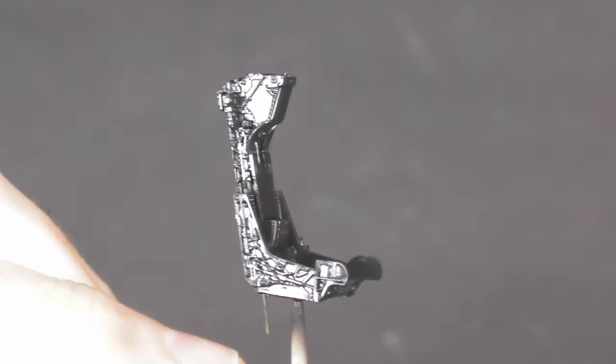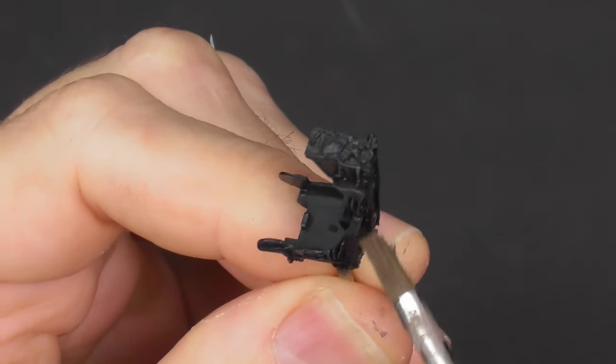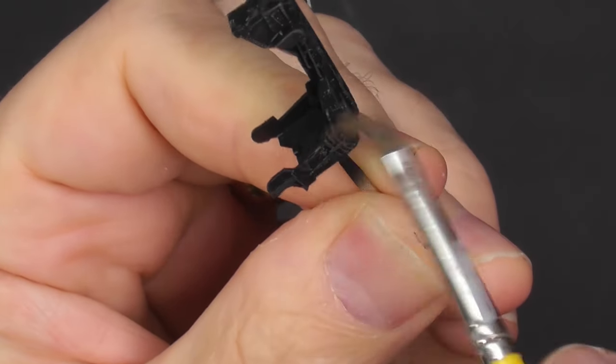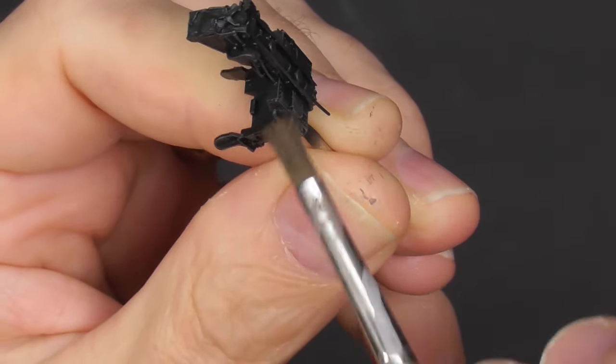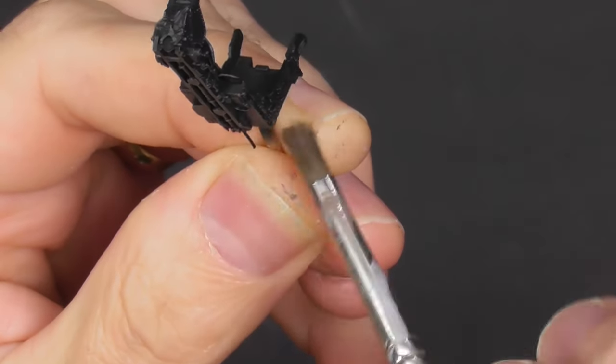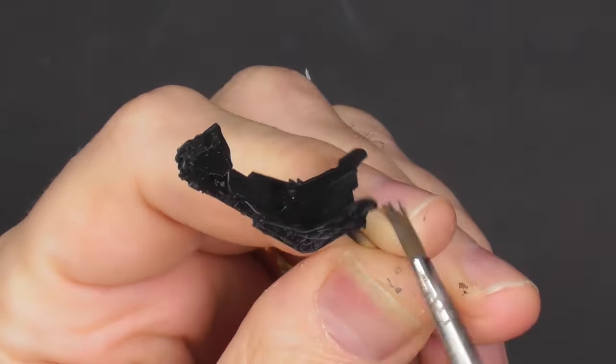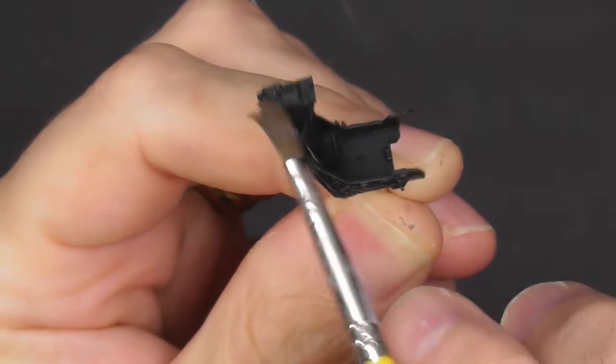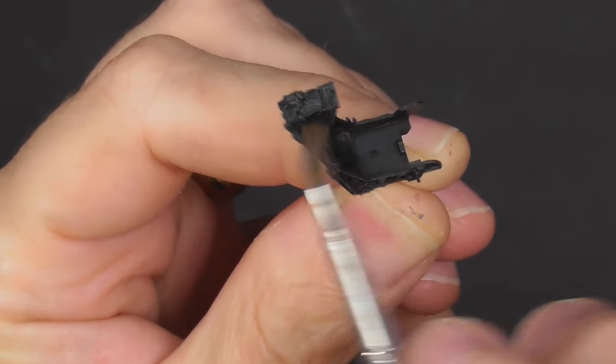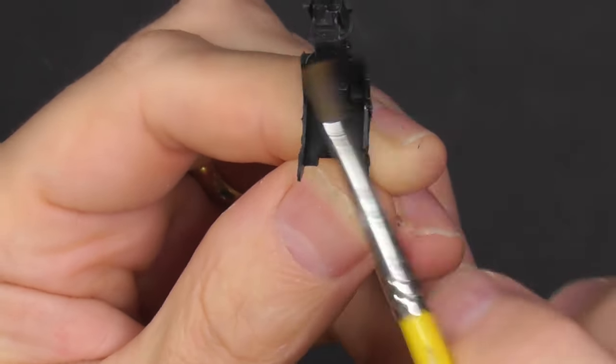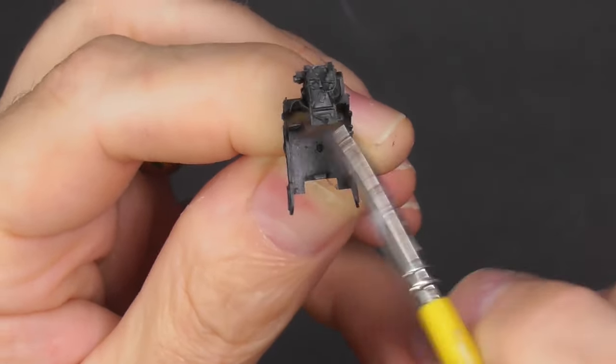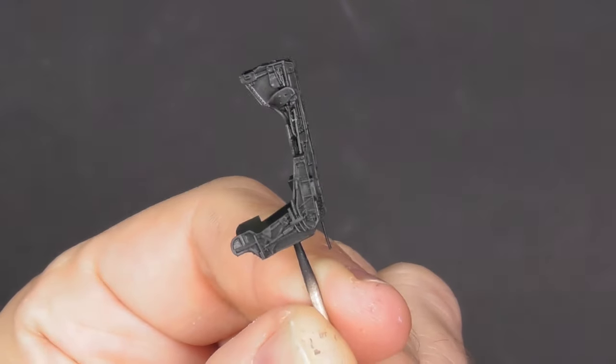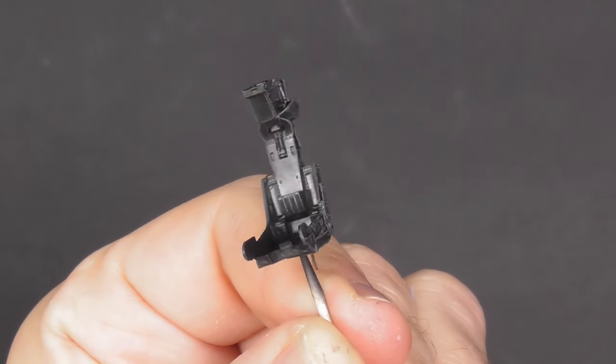Next was a layer of MRP and that gives a nice glossy finish and then we can pick out some of the detail with the dry brushing technique. So this is a mix of Ammo of Mig dry brushing paint, grey and a bit of black just to darken it down. Don't want too much contrast. Don't want it to look like it's been snowing in there. It's going to pick out that detail nicely and keep that sheen. That's what I want.